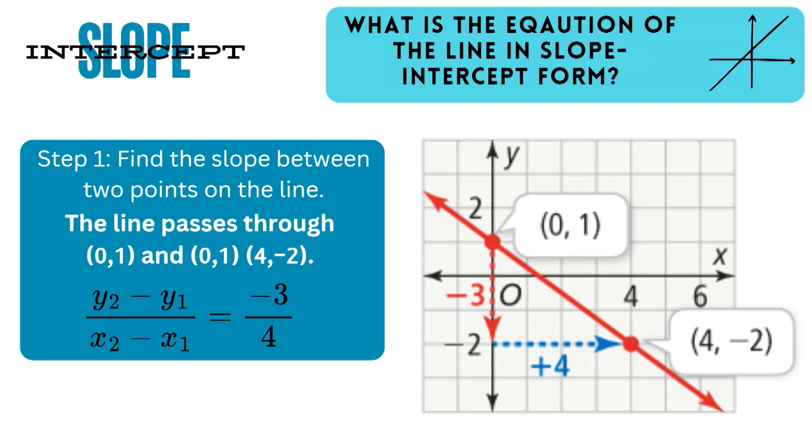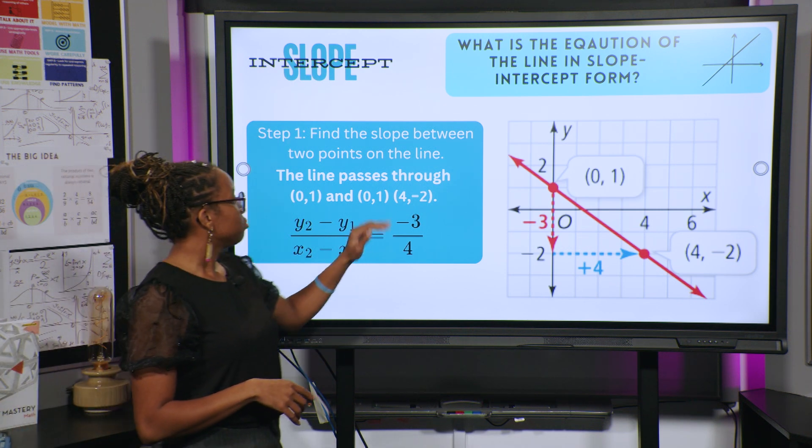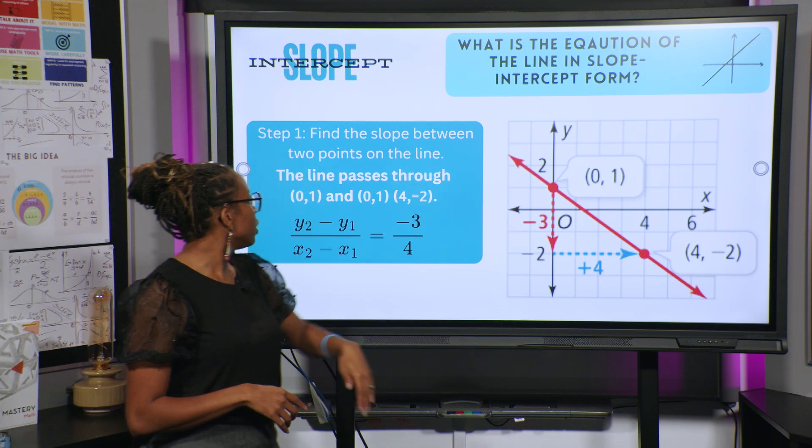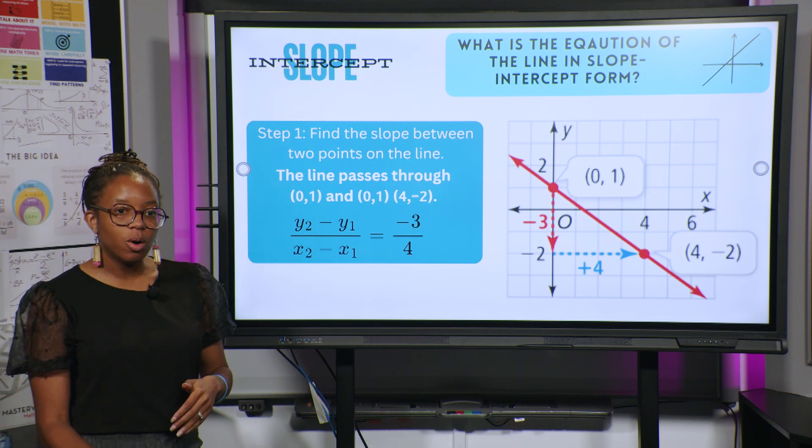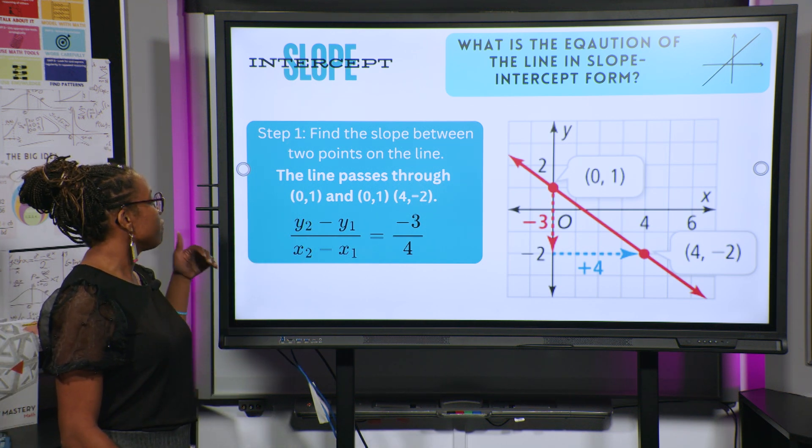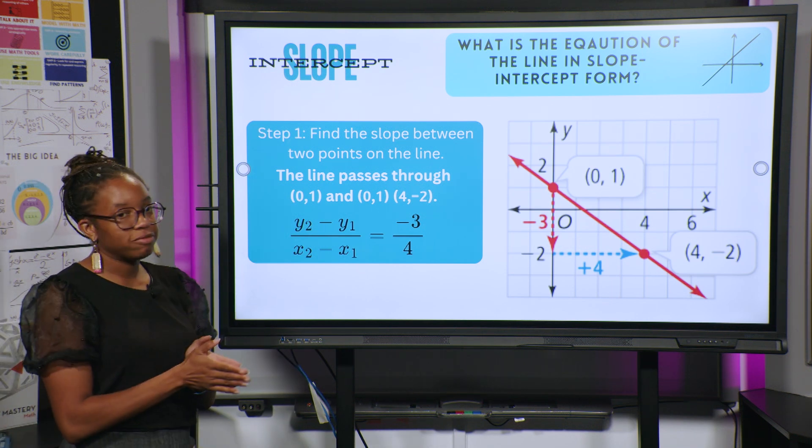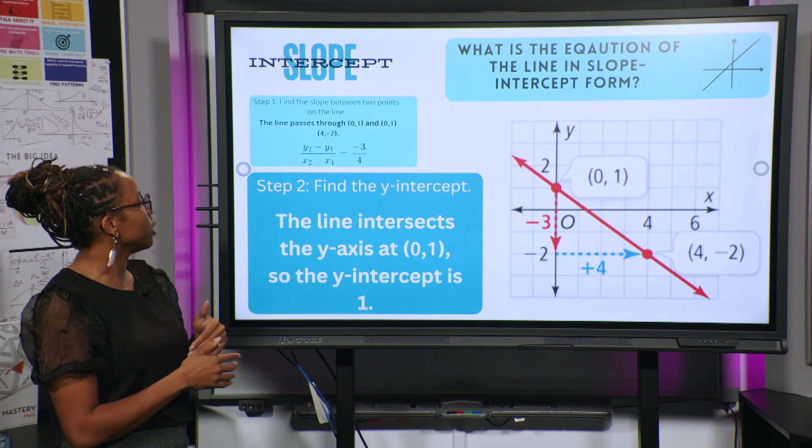So we need to figure out where does that line pass through. So here we have y2 minus y1 over x2 minus x1. And that is going to give you the slope. So from our two points, we use both of those y's. Therefore, we have -2 and 1. We subtract them. -2 minus 1, or you could say 1 minus -2, you're going to get -3. Same thing for our x's. We have x2 minus x1. Once we subtract those two, we get 4. Therefore, our slope is -3 over 4.